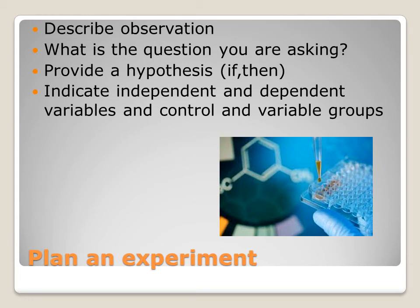Now I want you to analyze that first experiment and then plan your own experiment. This is not an experiment that will be performed — it's just about developing questions, developing hypotheses, and designing some sort of experiment that includes your independent and dependent variables and your control and experimental groups. Come up with some idea, make some observations, ask a question, provide a hypothesis using that if-then statement, and indicate those different variables and groups. It doesn't have to be complicated — something simple enough where you can define these different parameters.